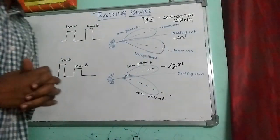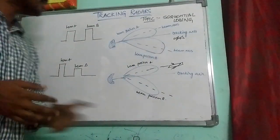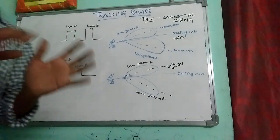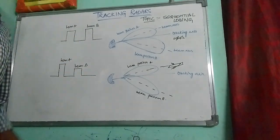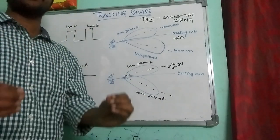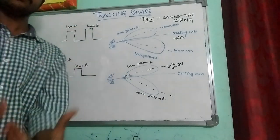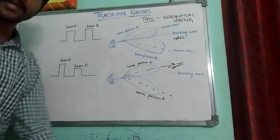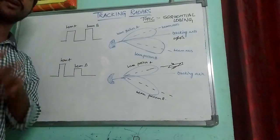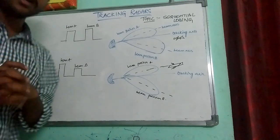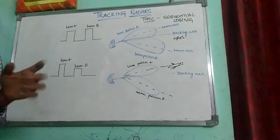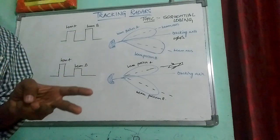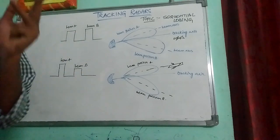Hello friends, welcome back to Red Engine Tutor. The topic is sequential logging. In the previous video, I discussed why we need tracking and what basic information we have to track a target. In this video, we will discuss one of the important techniques we employ to track the target. There are mainly three techniques: sequential lobing, conical scanning, and monopulse tagging.